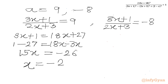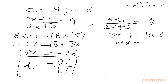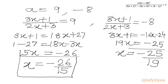So x equals minus 26 over 15. Now we solve the second equation with A equal to 8, and 3x plus 1 will be equal to minus 16x minus 24, so 19x will be equal to minus 25. From here we get our second solution: x equals minus 25 over 19. So there are two solutions: minus 26 over 15 and minus 25 over 19. This was method number 1.